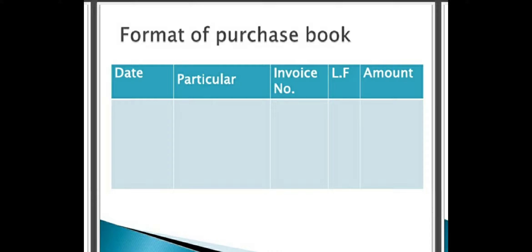You can see the format of the purchase book here. In the first column is the date, second column is particulars, third column is invoice number, fourth column is ledger folio, and the last one is amount. In the date column, all transactions — even in the journal book — are written in chronological order. Similarly, when maintaining subsidiary books, in the purchase book also we write transactions in chronological order, that is date-wise.